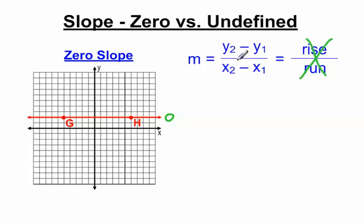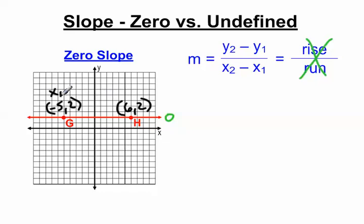To use this slope formula, we need to find the coordinates of these two points. Point G is at negative five, two — back five, up two. Point H has coordinates six, comma two — over six, up two. Then I need to figure out which I'll make x1, y1 and x2, y2. So let's go: x1, y1 is the point G at negative five, two, and x2, y2 is point H at six, two. Now I can substitute these numbers into the equation.